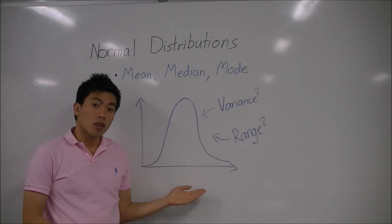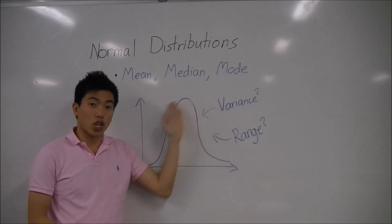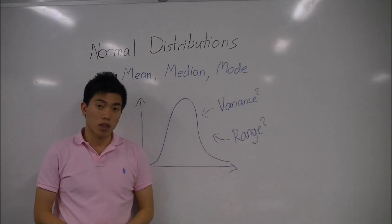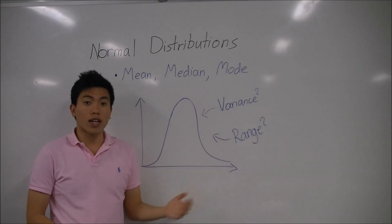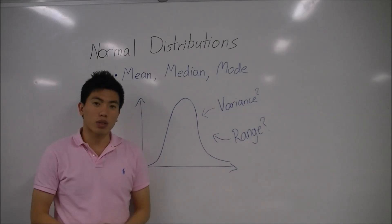Could you draw this curve, and the effects that these have when they're changed on this curve? And lastly, can you tell us whereabouts in the real world would you find a normal distribution, and why would they be used?